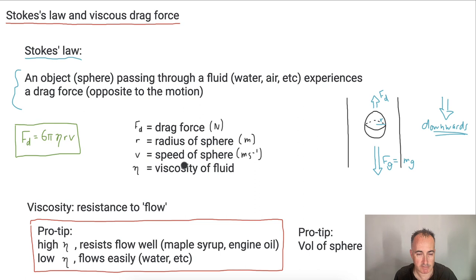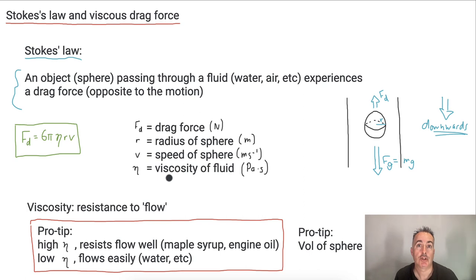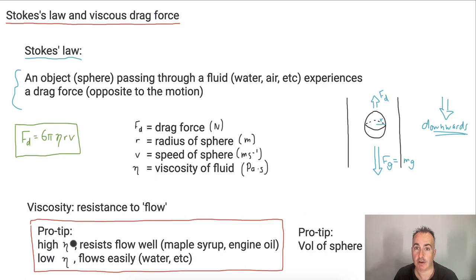Then we have eta, the viscosity of the fluid — this Greek symbol that looks like a curly N. This is the viscosity of the fluid, measured in Pascal-seconds, which is a very common unit. Viscosity is a resistance to flow. If something has a low viscosity, it flows easily, like water. If it has a high viscosity, it resists flow — something like maple syrup or engine oil. Technically, glass is considered a fluid, and it has a very high viscosity because it doesn't flow very well.